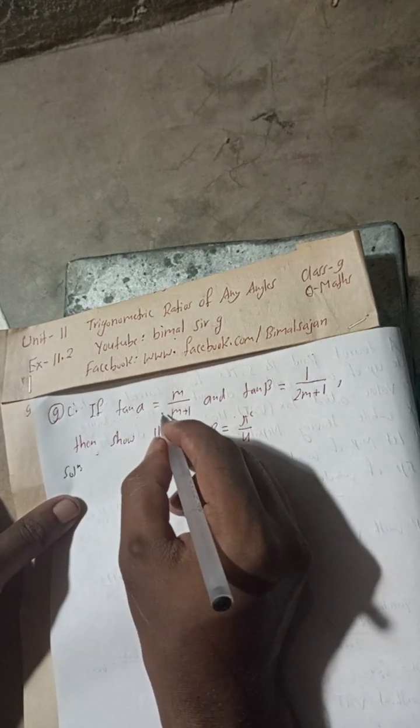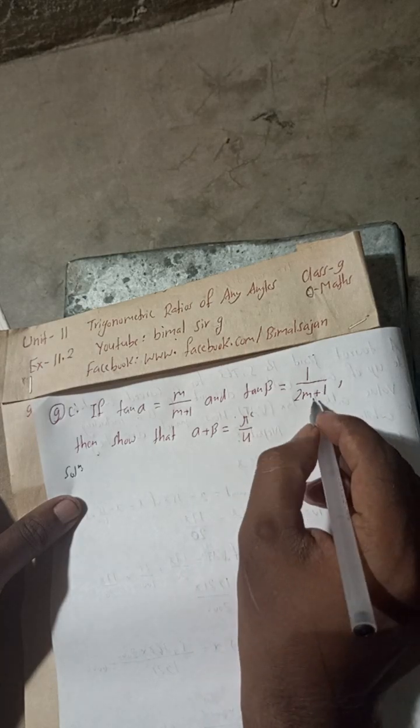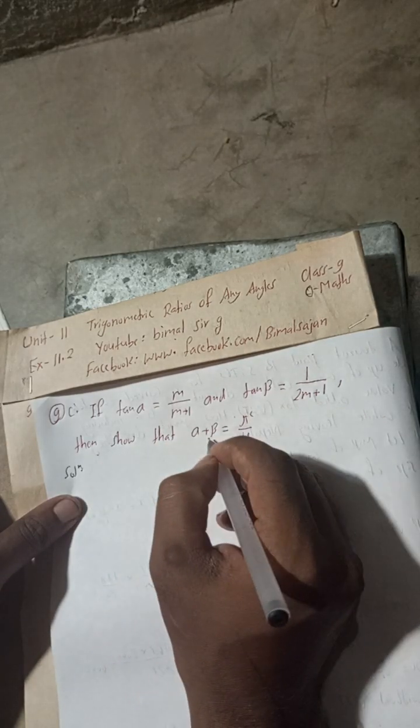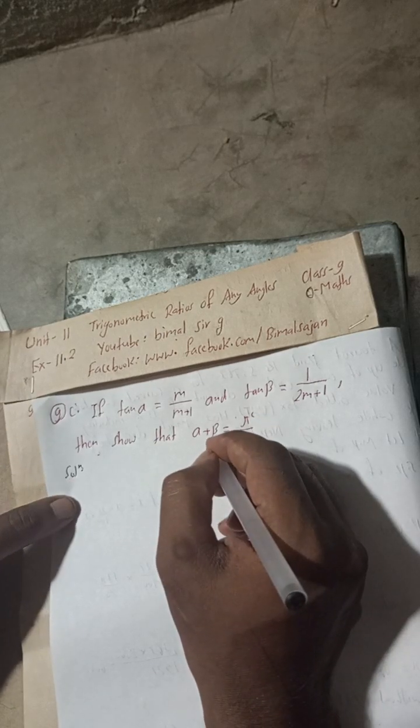If tan α = m/(m+1) and tan β = 1/(2m+1), show that α + β = π/4 radian. You can see here given tan α and tan β values, so now we will write tan(α + β).